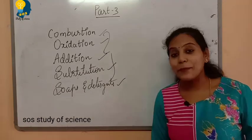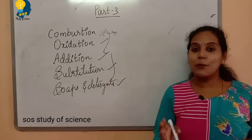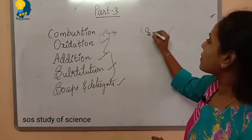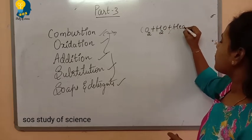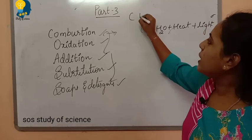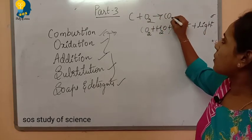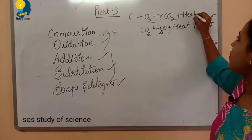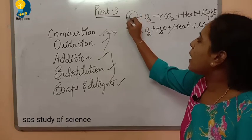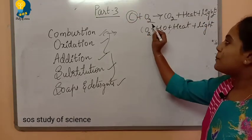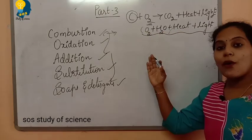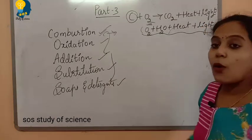So simply put — what is meant by combustion? All carbon compounds in all their allotropic forms burn in the presence of oxygen to give carbon dioxide, water, heat, and light. This is what we call combustion. For example, carbon burns with oxygen to give carbon dioxide along with heat and light. All carbon compounds burn in the presence of oxygen — that is what we call combustion.